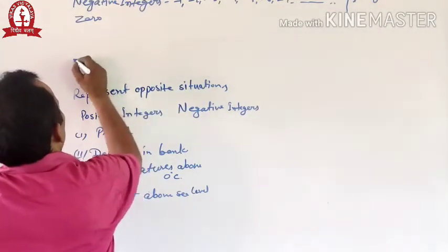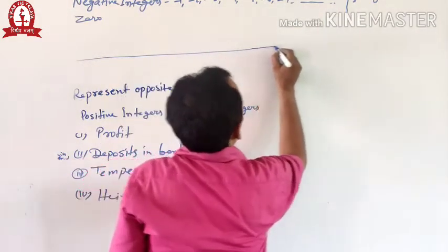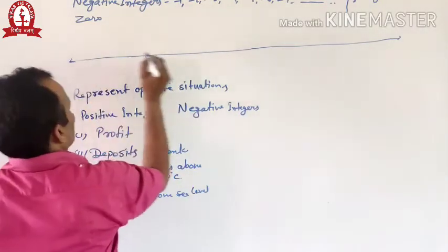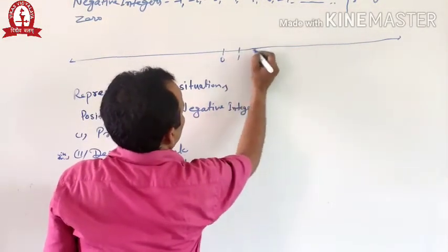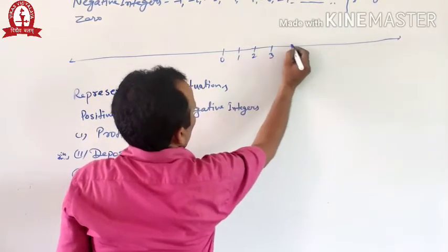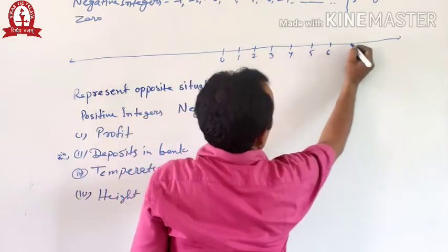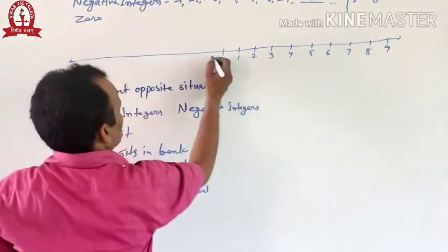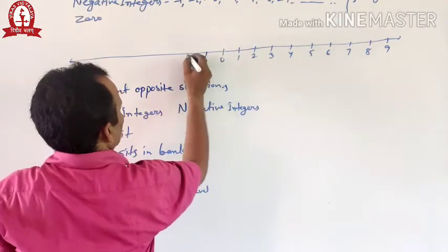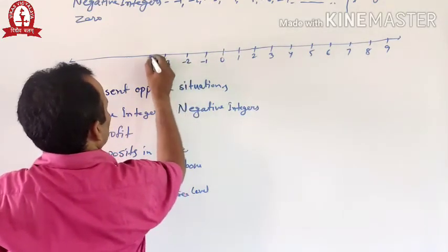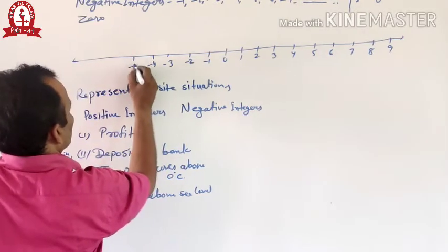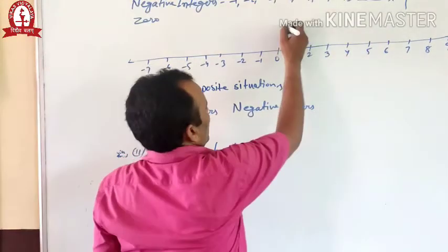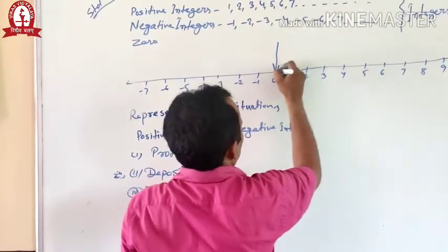If you draw a number line like this — here, this one is zero, and to the right: one, two, three, four, five, six, seven, eight, nine, and so on. To the left: minus one, minus two, minus three, minus four, minus five, minus six, minus seven. And this is zero in the center.